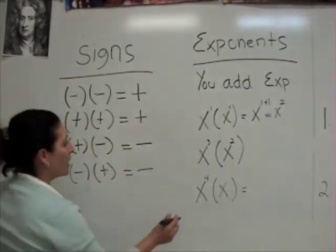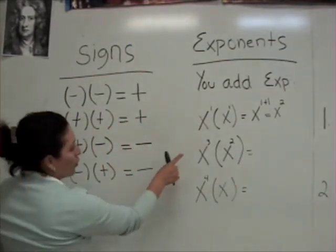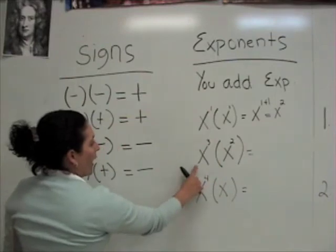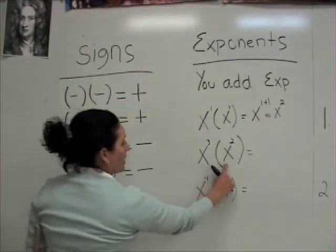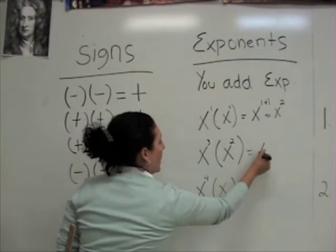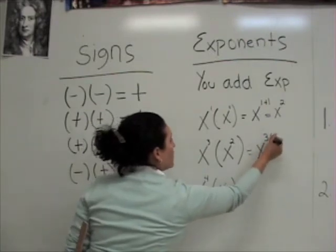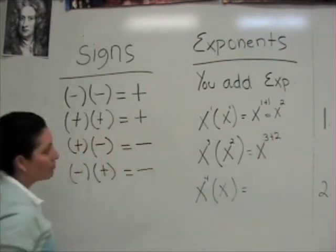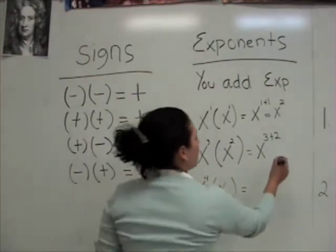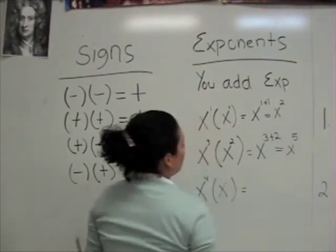The same thing happens in the following one. We're going to add the exponents. So x that multiplies x — we have the same base — it's going to be x to the third power plus x to the second power. So there's going to be x to the fifth power.